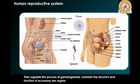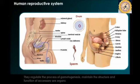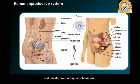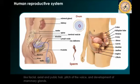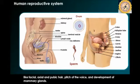These hormones regulate the process of gametogenesis — which is the formation of sperms and ovum — and maintain the structure and function of the accessory sex organs. They are also responsible for secondary sexual characteristics like facial, axial, and pubic hair, the pitch of the voice, and the development of the mammary glands.